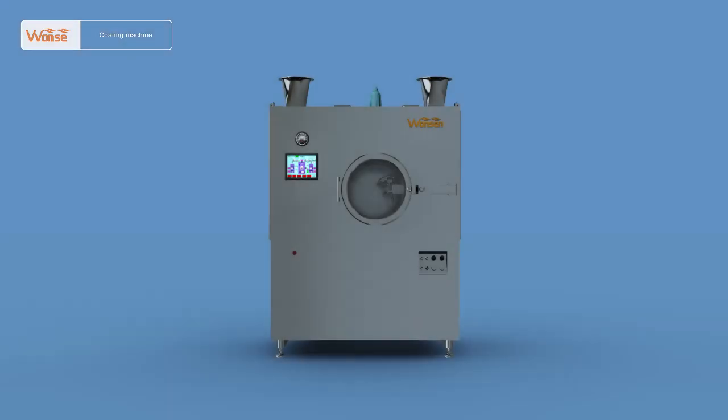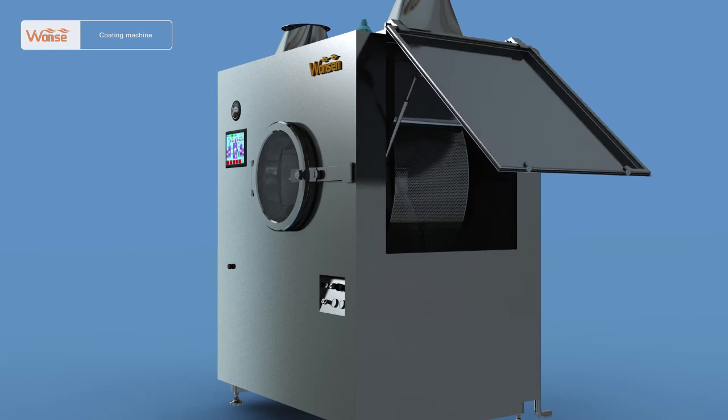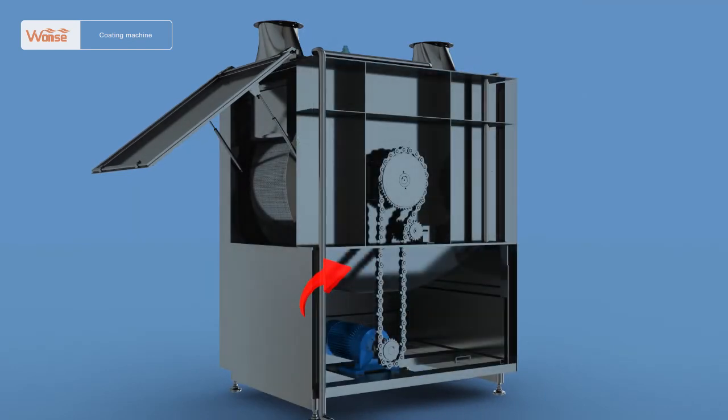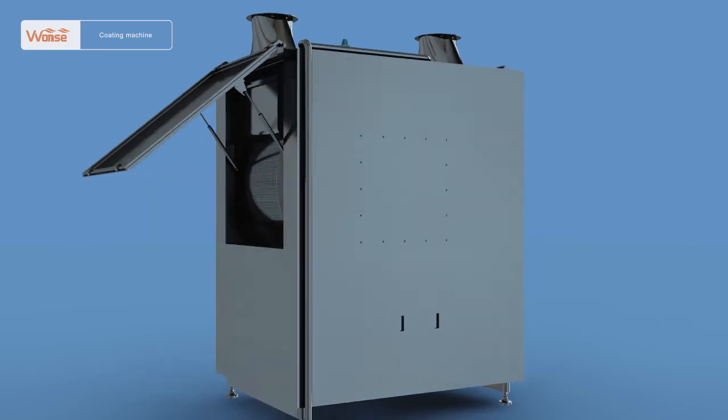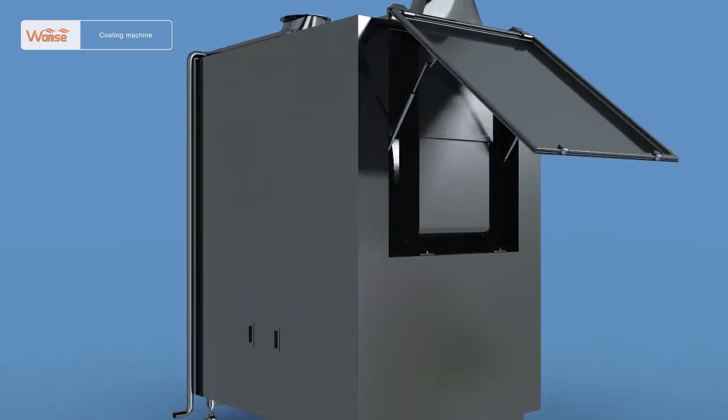The main machine is mainly composed of the upper and lower casing, fully closed front door and side door, semi-circular water tray, explosion-proof motor, driving system, air inlet device, air outlet device, and touch screen.